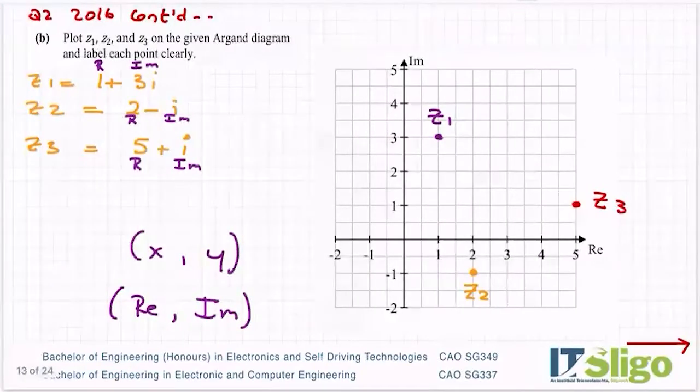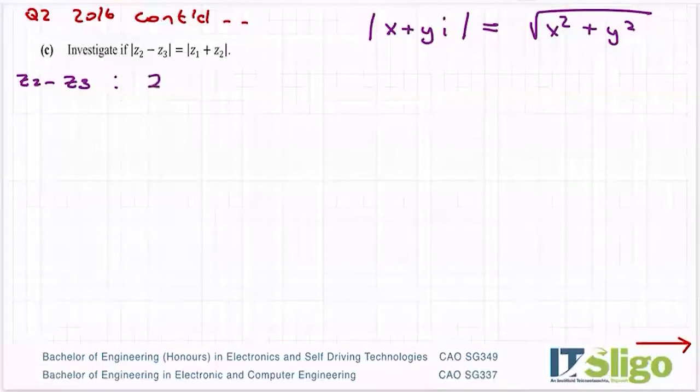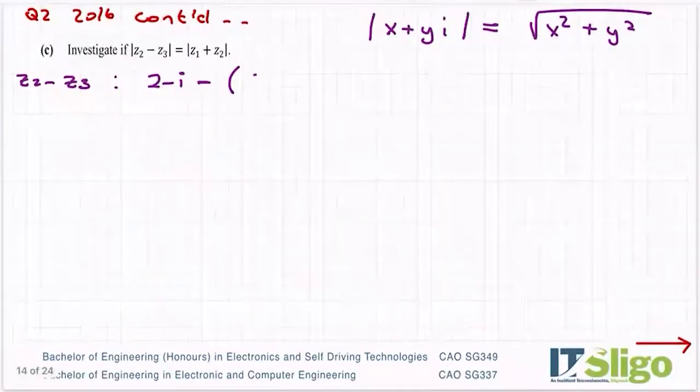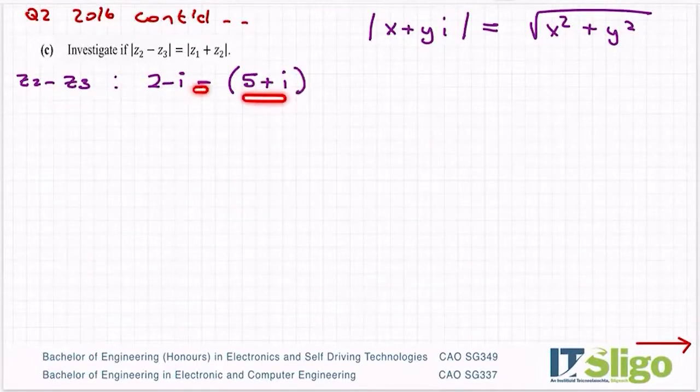At the moment I have, if I look at Z2 minus Z3, I have Z2 was 2 minus i and it's minus. Now be careful because Z3 comes in two parts, the real and the imaginary. What was that? 5 plus i. So that minus is going to change the signs of both parts of that complex number. So 2 minus i minus 5 minus i.